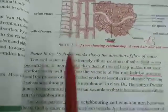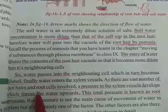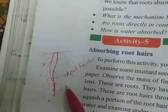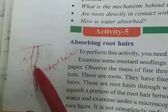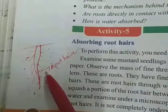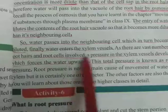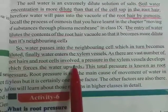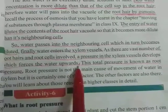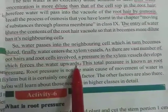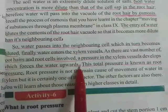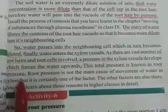Water passes into neighboring cells, which in turn become diluted, and finally water enters into the xylem vessels. Any plant root contains a vast number — millions of tiny root hairs. Because of the presence of this vast number of root hairs, pressure develops in the xylem vessels, which forces the water upwards. This total pressure is known as root pressure, and root pressure is useful for absorption of water and minerals in a plant body.